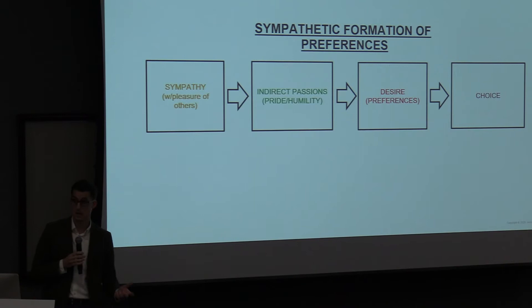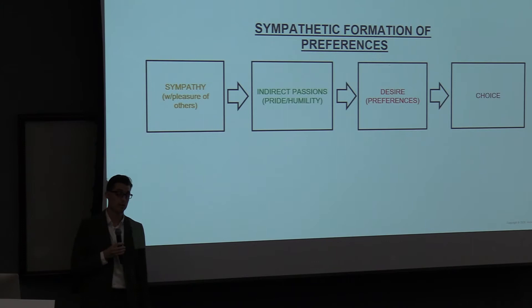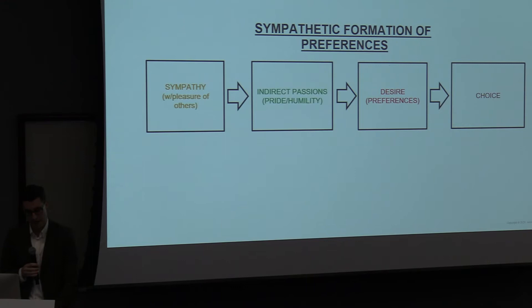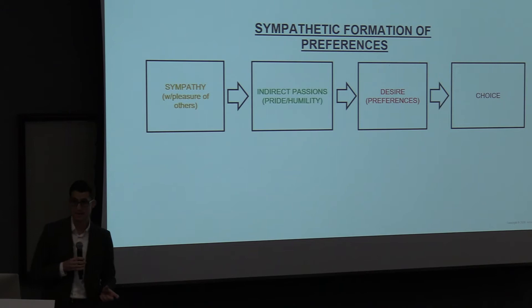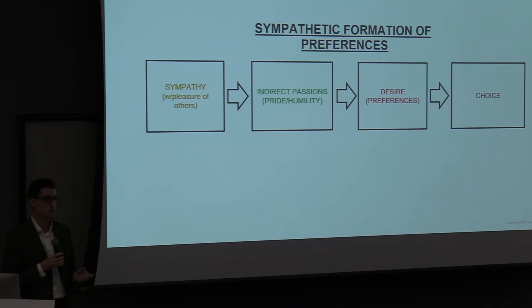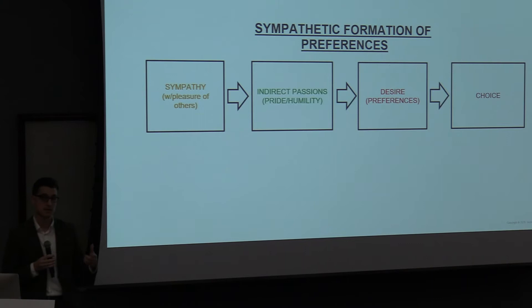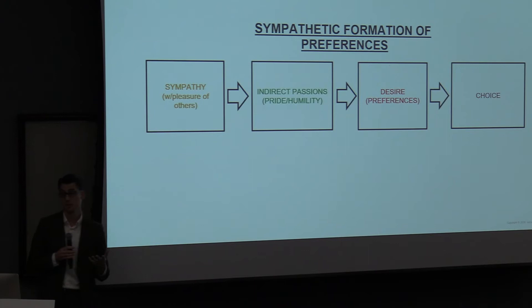In some respects Hume's understanding of preferences is similar to Veblen's, but he has a very different assessment of commerce. He actually takes commercial society to be the form of social and economic organization most suited to human nature, going as far as to claim that the ages of refinement or commerce are both the happiest and the most virtuous. What I emphasize in this paper is that his view derives from the fact that he understands happiness to largely consist in the process of preference satisfaction — not the end state of having preferences satisfied. The idea is that commercial society's freedom and dynamism provides increasing opportunity and an array of new socially meaningful purposes for individuals to pursue.